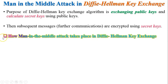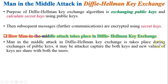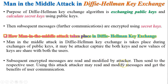The man-in-the-middle attack in Diffie-Hellman key exchange takes place during the exchange of public keys. The attacker may capture both keys and share new key values with both users. Whenever Alice or Bob wants to communicate and needs a secret key, they first exchange public keys as per the Diffie-Hellman algorithm. During this exchange, the attacker can capture the public keys, provide new public keys to both users, calculate the secret key, and then read and modify all subsequent encrypted messages.